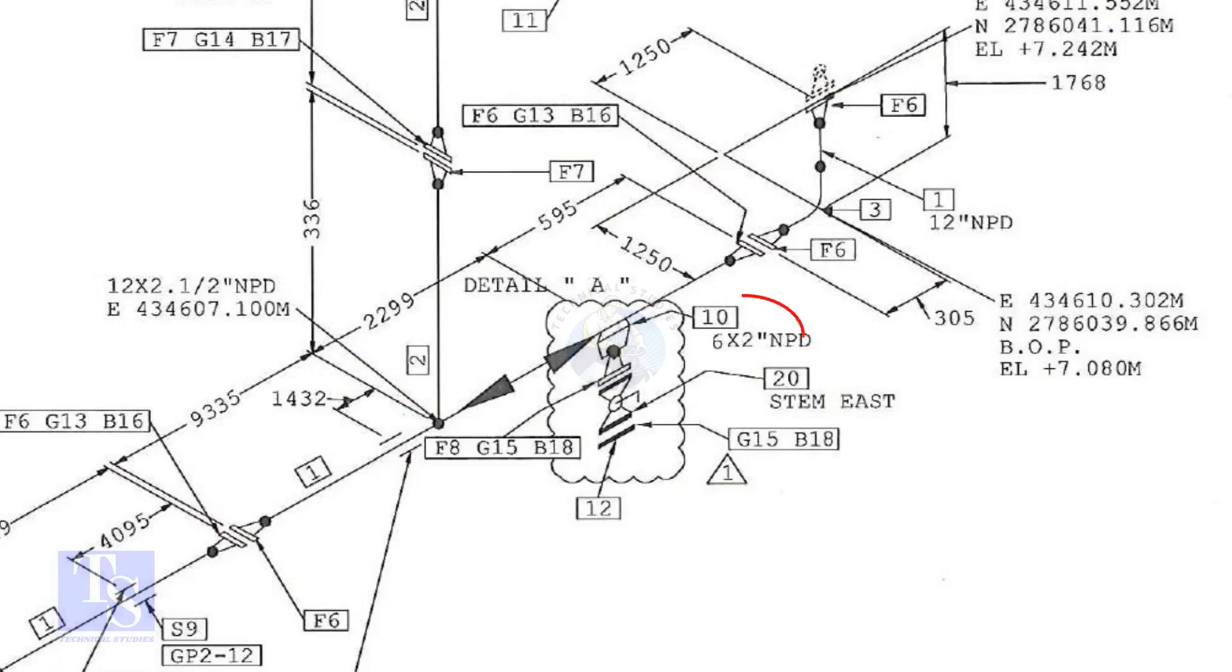In this drawing, the size of the weldolet is 6 inch into 2 inch. Let us check what is item number 10 in the description.